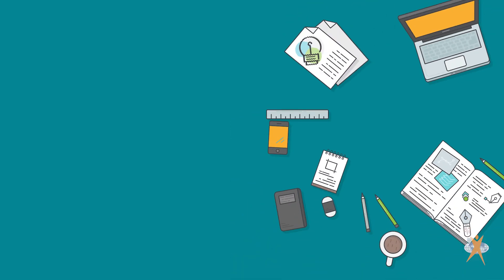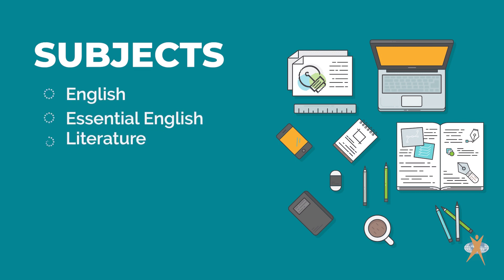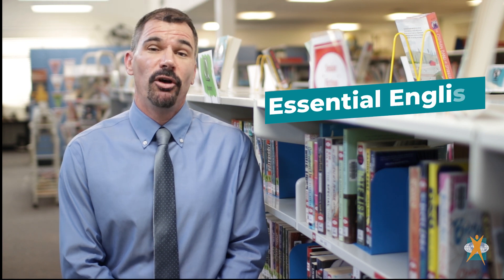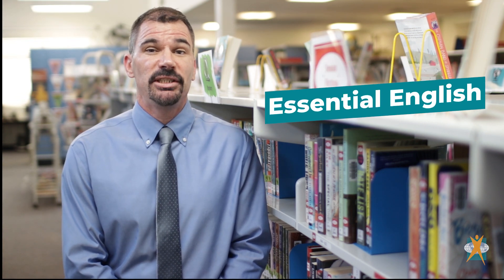The QCAA English Learning Area is made up of three senior secondary subjects in Year 11: English, Essential English and Literature. These continue through into Year 12 with the addition of English and Literature extension. The subject Essential English develops and refines your understanding of language, literature and literacy skills which will enable you to interact confidently and effectively with others every day in the community, social and applied learning contexts.